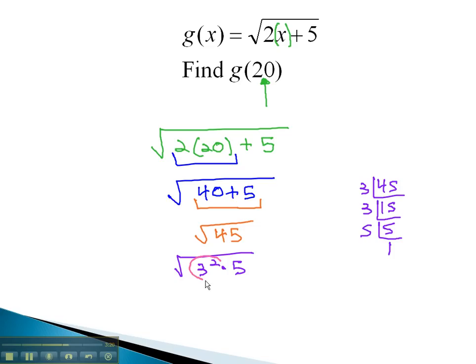Sure enough, we can simplify by pulling a 3 out of the radical to get our final answer, 3, times the square root of 5.